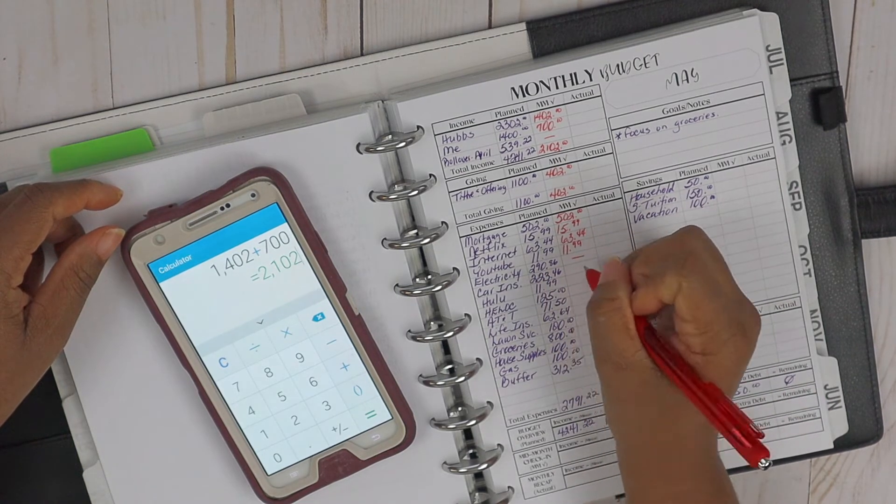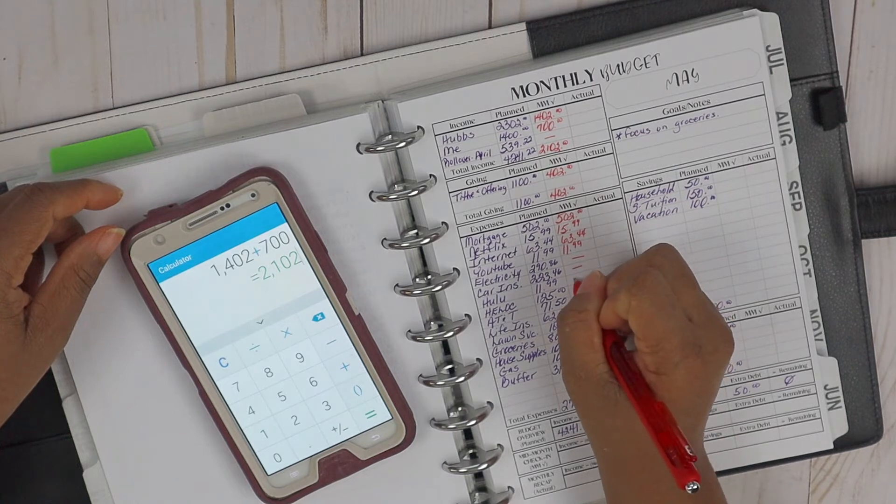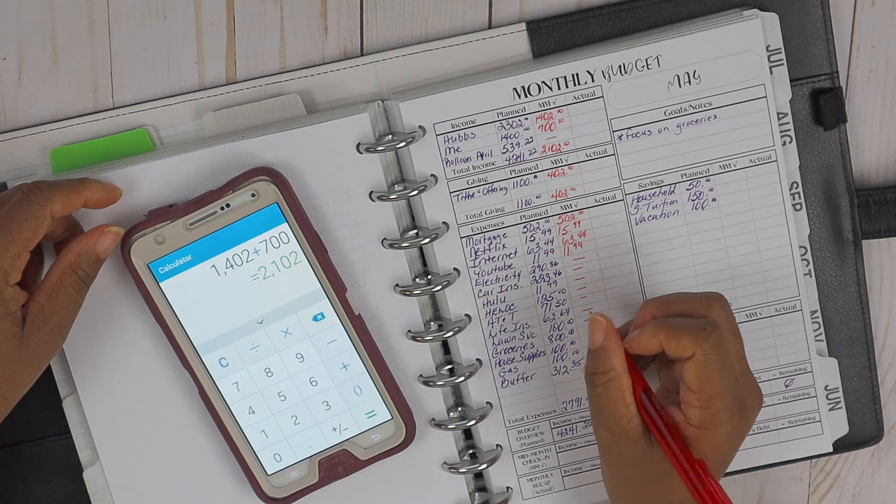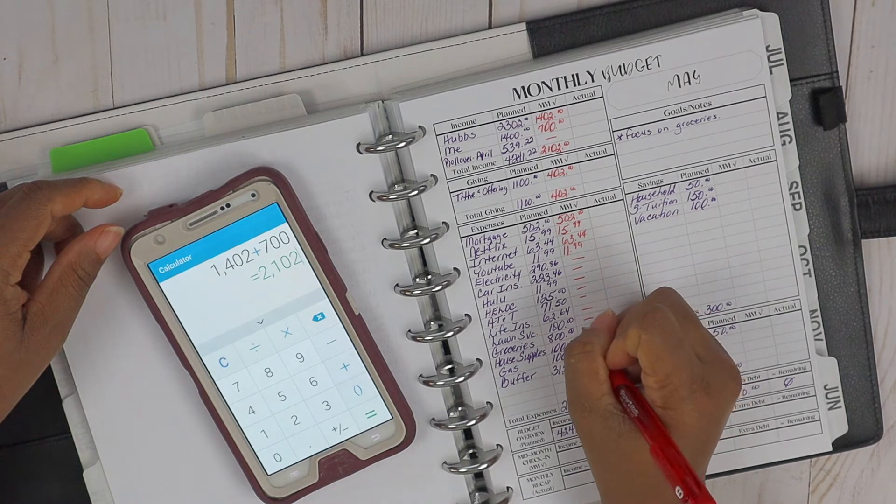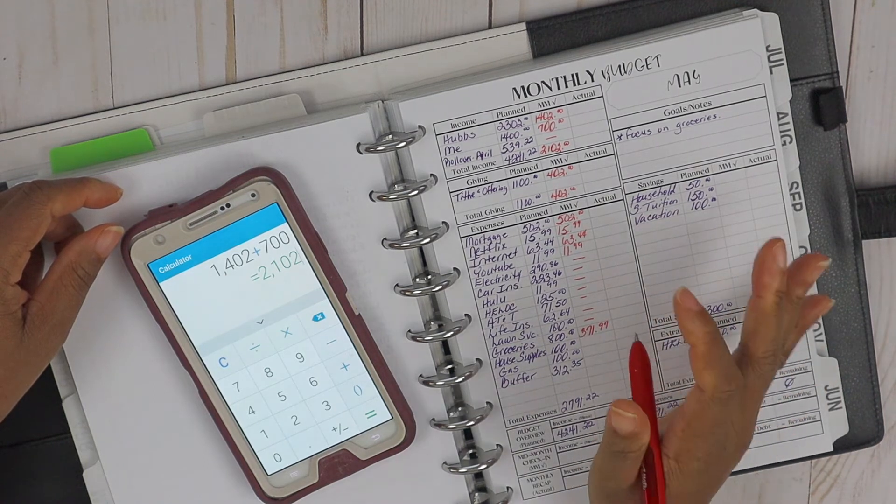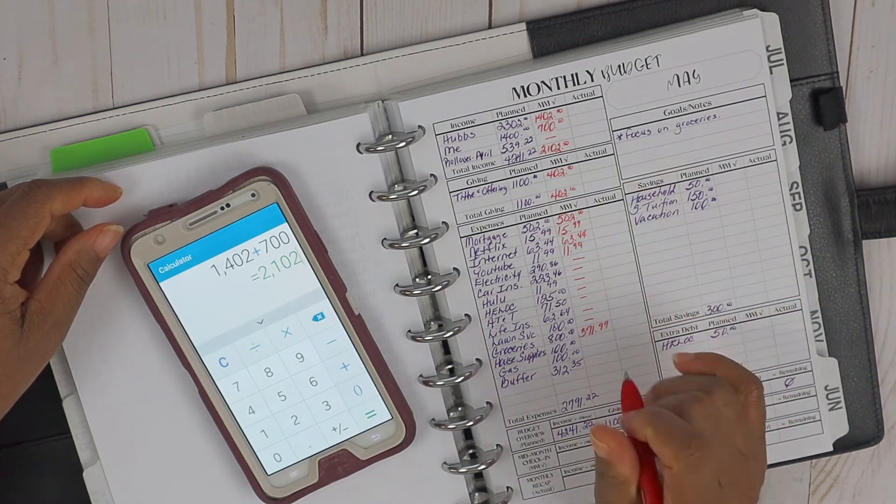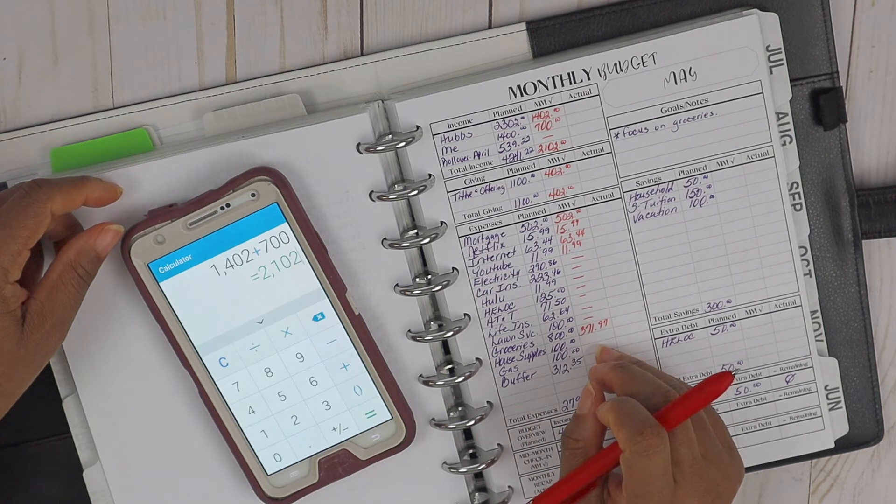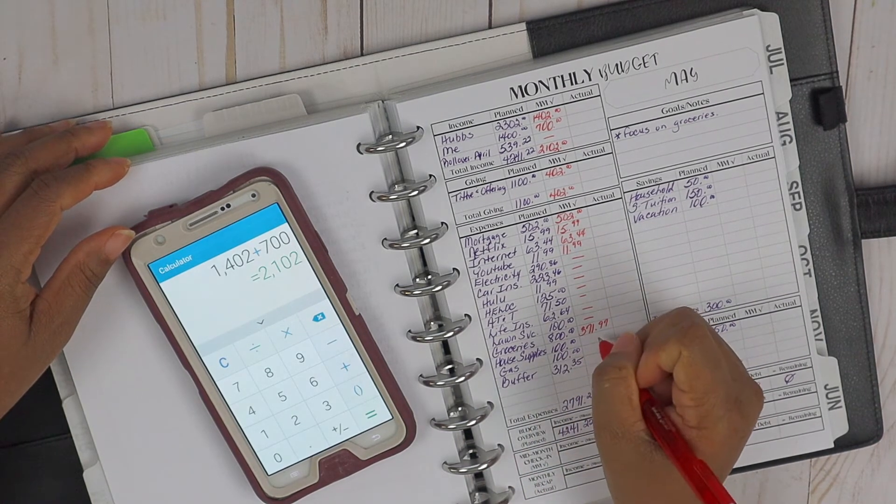Those are not due yet, so I'm just going to put a dash here. So when we get here to our groceries, our groceries came in at a total of $371.97, which is amazing. I'm really loving that because you all know that the grocery budget is a tough one for us, guys.